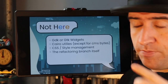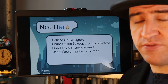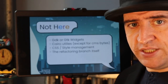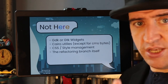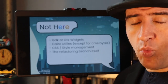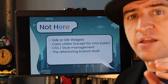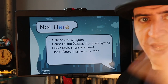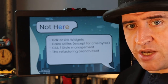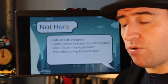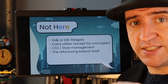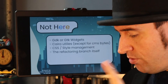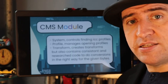What is NOT in this code: we do not have GDK and GDK widget stuff — nothing to do with writing colors in widget land. There are no Cairo utilities here — that's the application branch — except for what we do with Cairo bytes when converting them for previewing CMS work during print preview. There's no style or CSS management work, and it's not the refactoring branch itself — a lot of the work to actually plug this new module into Inkscape is not included here; that comes in the application branch, which has its own review.